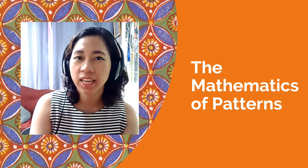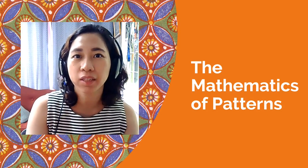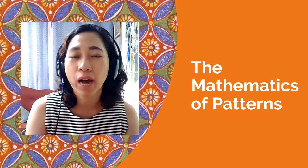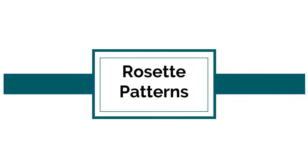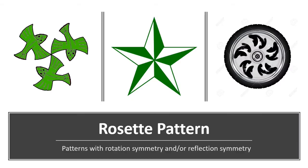We are still in our mathematics of patterns. For this video, we will be talking about rosette patterns. A rosette pattern is a pattern with rotation symmetry — this is required. However, reflection symmetry is not required. So remember, for a rosette pattern, the important thing is you should always have rotation symmetry — that is required. Reflection symmetry is just optional.